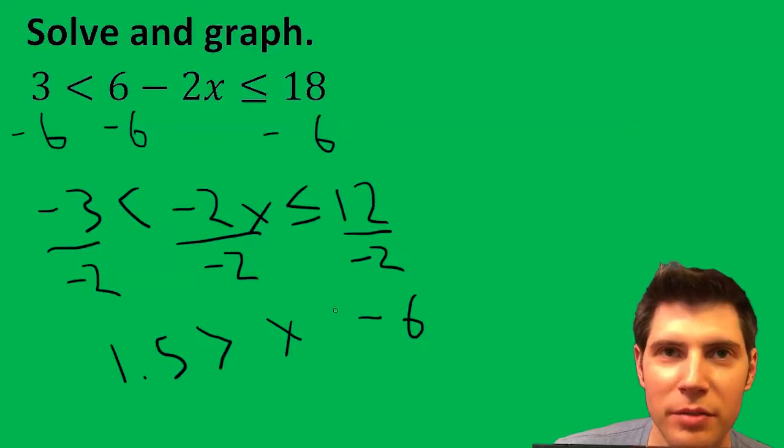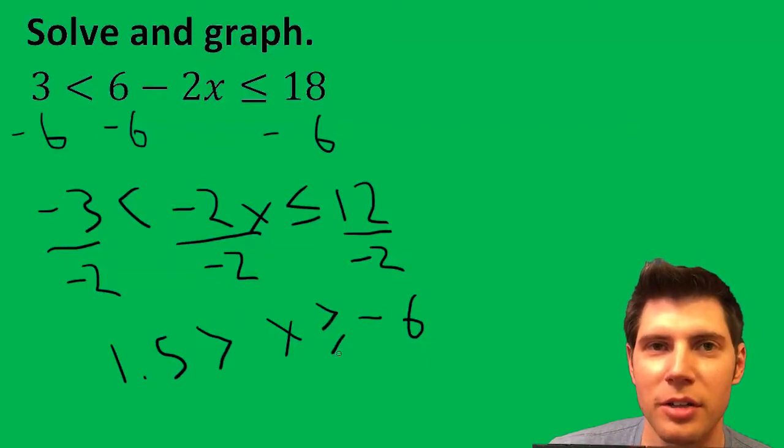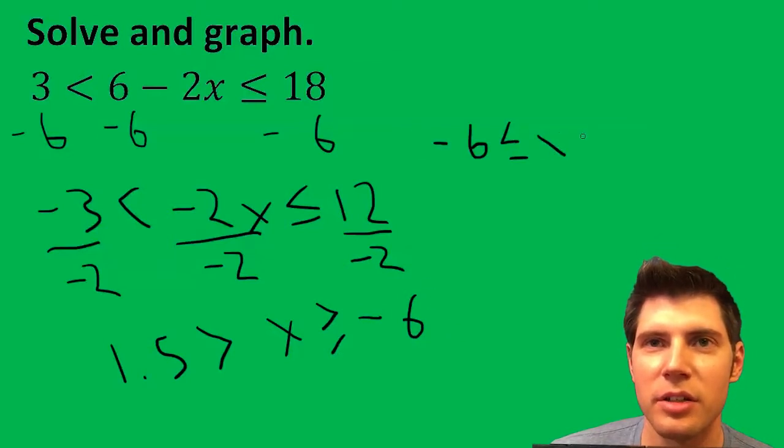When you divide by a negative number, you need to switch the direction of the sign. So our final answer is -6 ≤ x < 1.5.